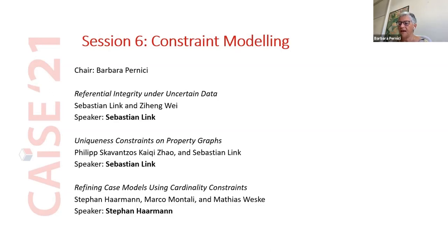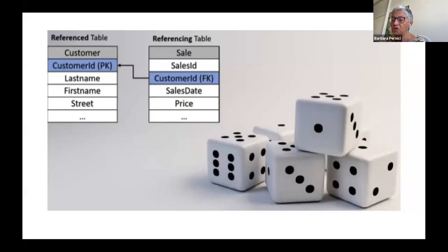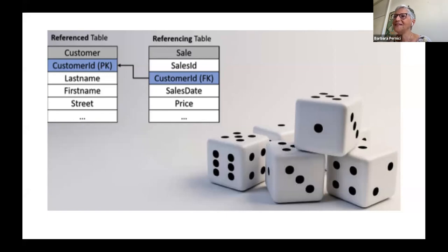Sebastian is a professor of computer science at the University of Auckland, where he directs the data science program, which is famous for the development of the language ART. Sebastian's research interests are in data modeling, data quality, database design, and database theory, and he publishes regularly in conferences such as SIGMOD, ICDT, and VLDB, and in journals such as TODS, Information Systems, and the VLDB Journal. His first paper is about referential integrity under uncertain data. Sebastian, please start your presentation.